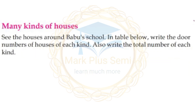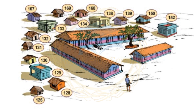Next: Many kinds of houses. See the houses around Babu's school. In the table below, write the door number of the houses of each type and also write the total number of each type.